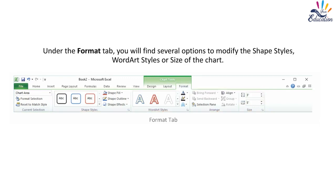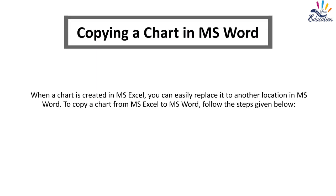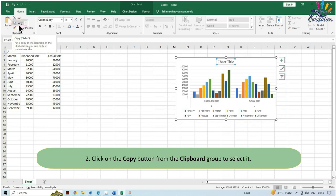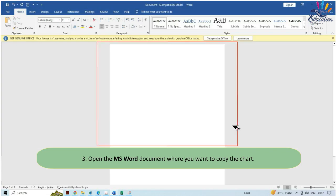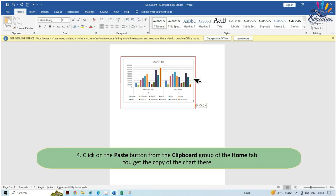Copying a Chart in MS Word: When a chart is created in MS Excel, you can easily copy it to another location in MS Word. To copy a chart from MS Excel to MS Word, select the chart and click the Copy button from the Clipboard group. Open the MS Word document where you want to copy the chart. Click the Paste button from the Clipboard group of the Home tab, and you get a copy of the chart there.